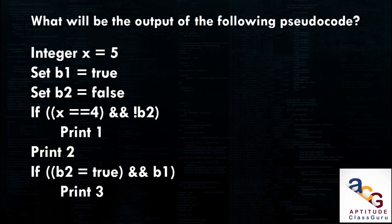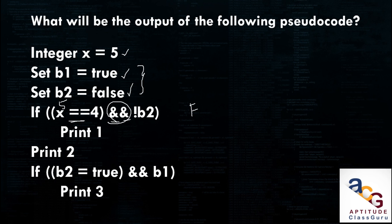Let's look at the first problem: what will be the output of the following pseudocode? Integer x equals 5, set b1 equal to true, set b2 equal to false — these two are boolean variables. If x == 4, which is a comparison operator — x is 5, not 4 — so this returns false. Ampersand ampersand NOT b2: we know that double ampersand is the AND gate operation. If both inputs are true, the output is true; otherwise it returns false. Since one input is already false, the entire condition is false.